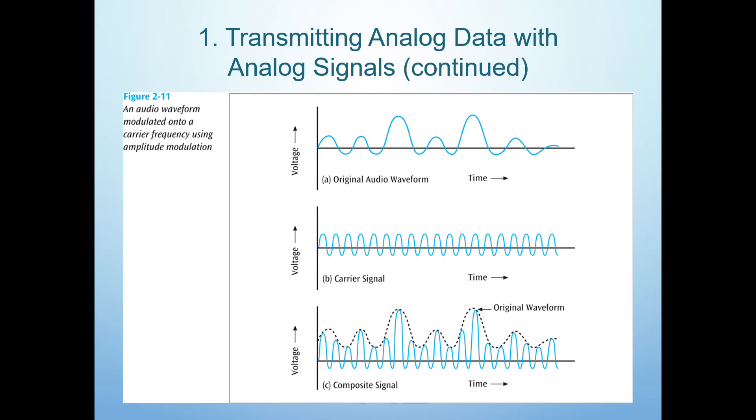This process is done at the sender, and at the receiver the data signal is going to be taken above the carrier, which is called demodulation. Modem is a well-known device that performs modulation at the sender and demodulation at the receiver. Modem is short for modulation demodulation.